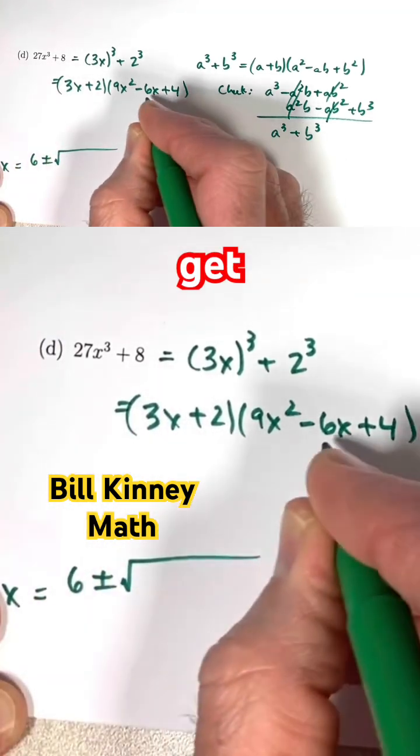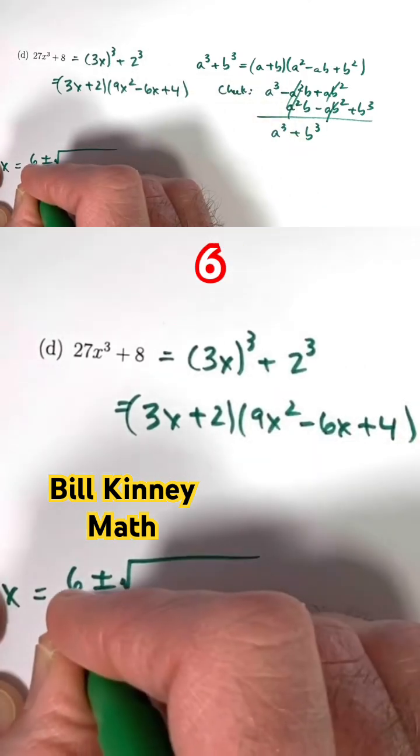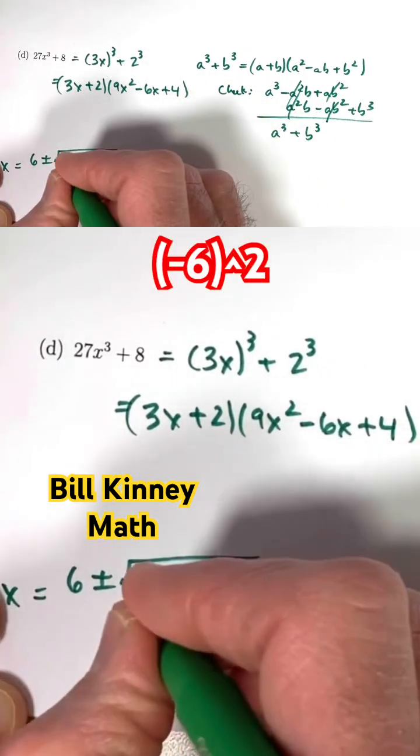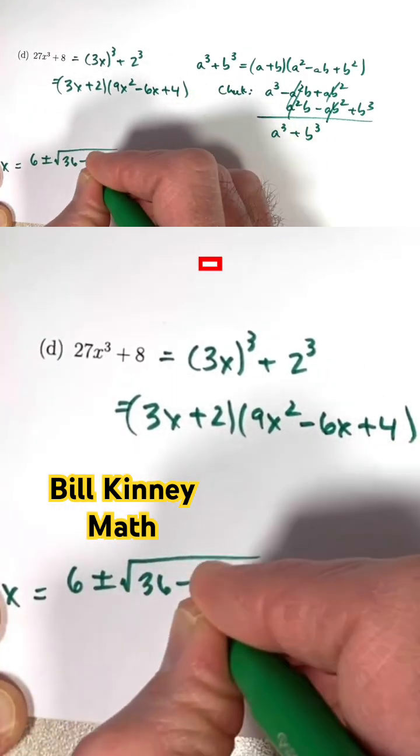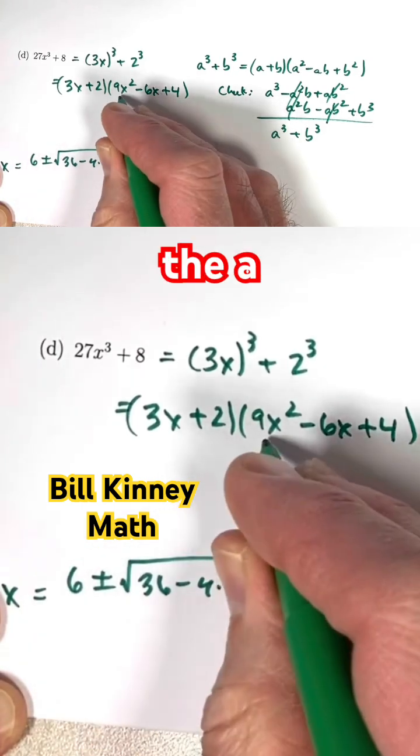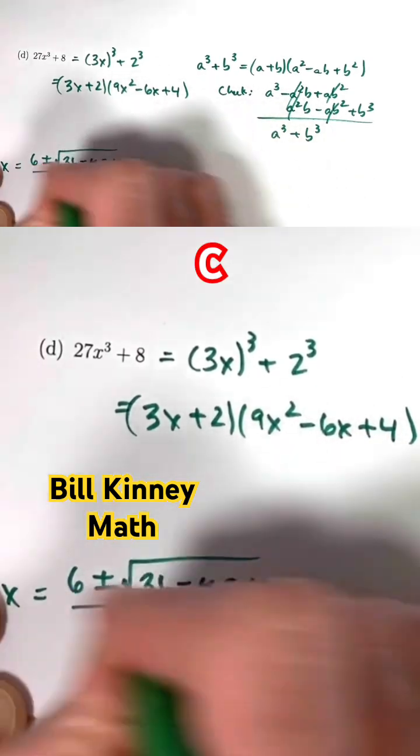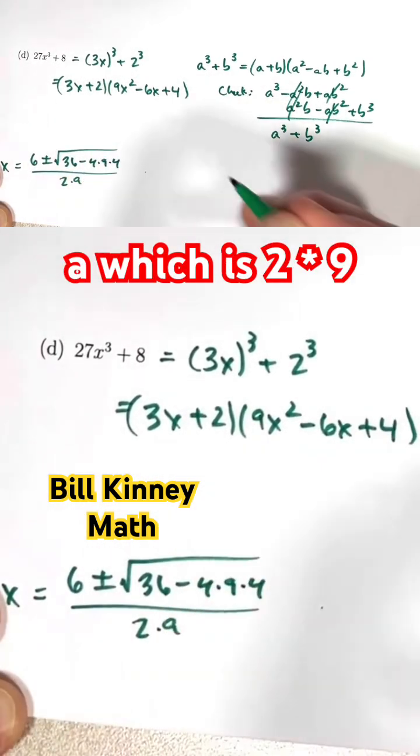You get negative b, which is negative of negative 6, positive 6, plus or minus negative 6 squared is 36, minus 4 times 9, that's the a, times c, all over 2 times a, which is 2 times 9.